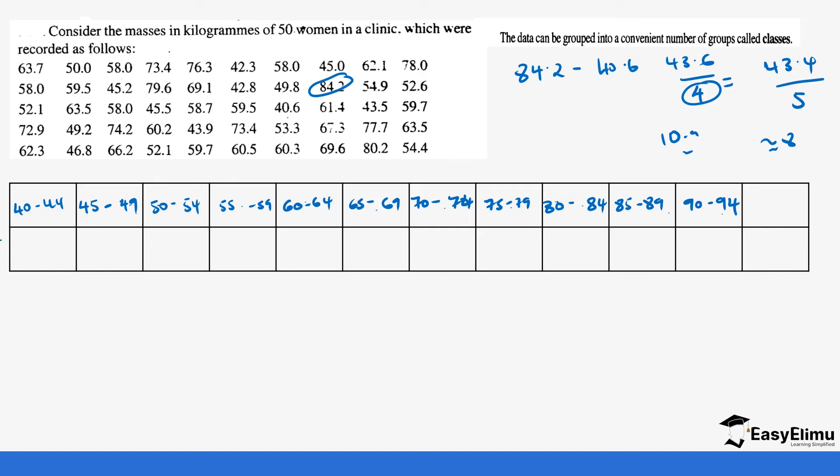The next thing is we are going to create the frequency, which is going to be represented by F or the number of times those values are appearing in this range. We want values from the range of 40 to 44.5. Let's look for the values. We have 44.5, we have 43.9, we have 42.3 and 42.8, we have 40.6, we have 43.5. The values that are falling in that range are 1, 2, 3, 4, 5. So that's how we get it.